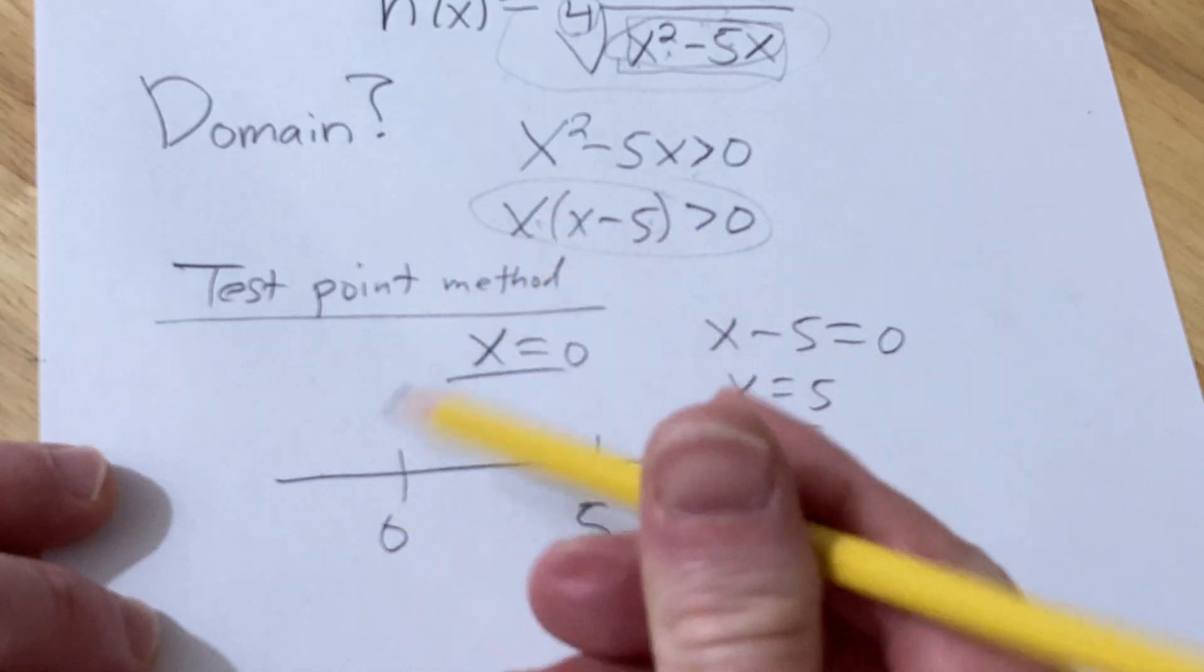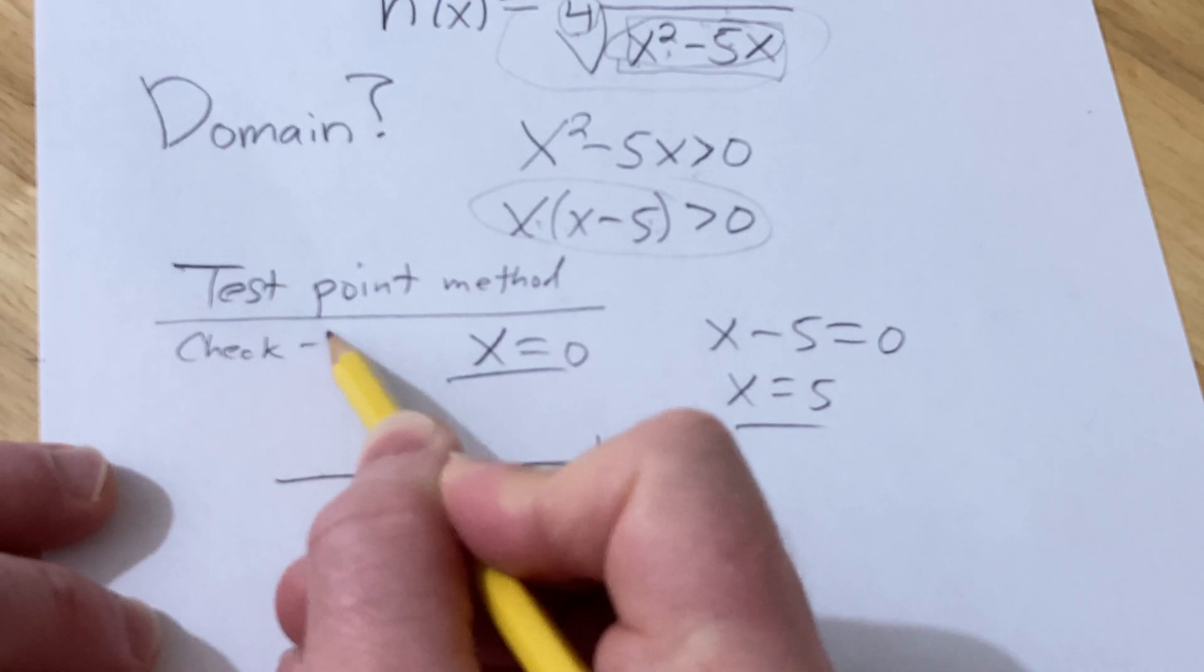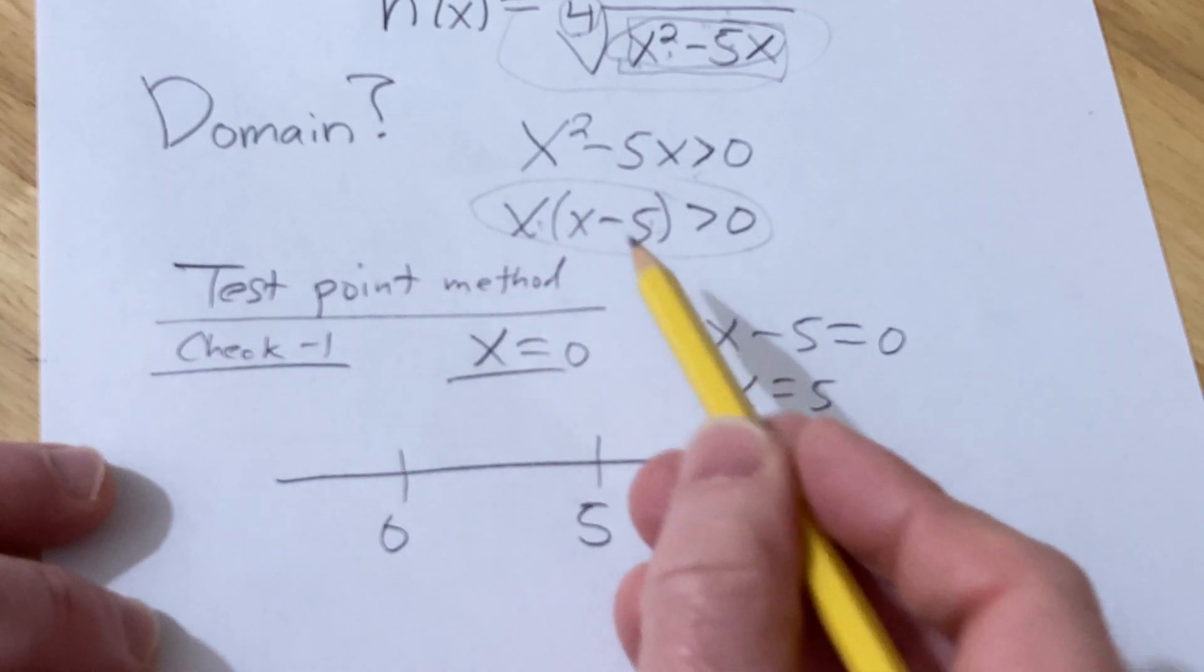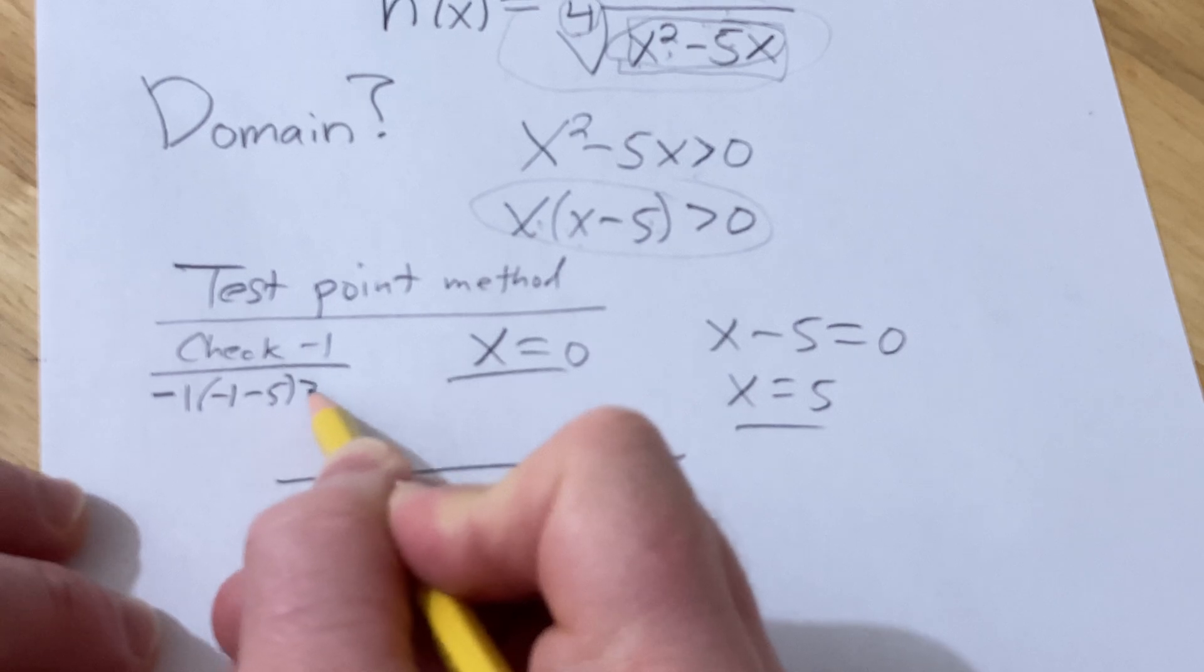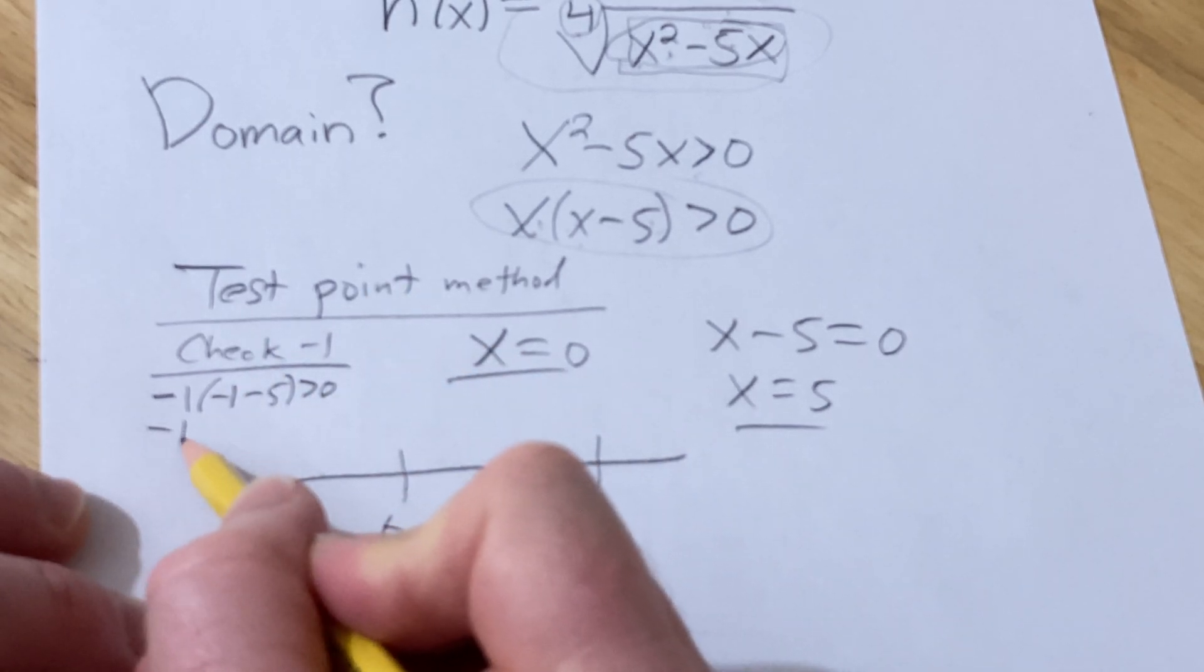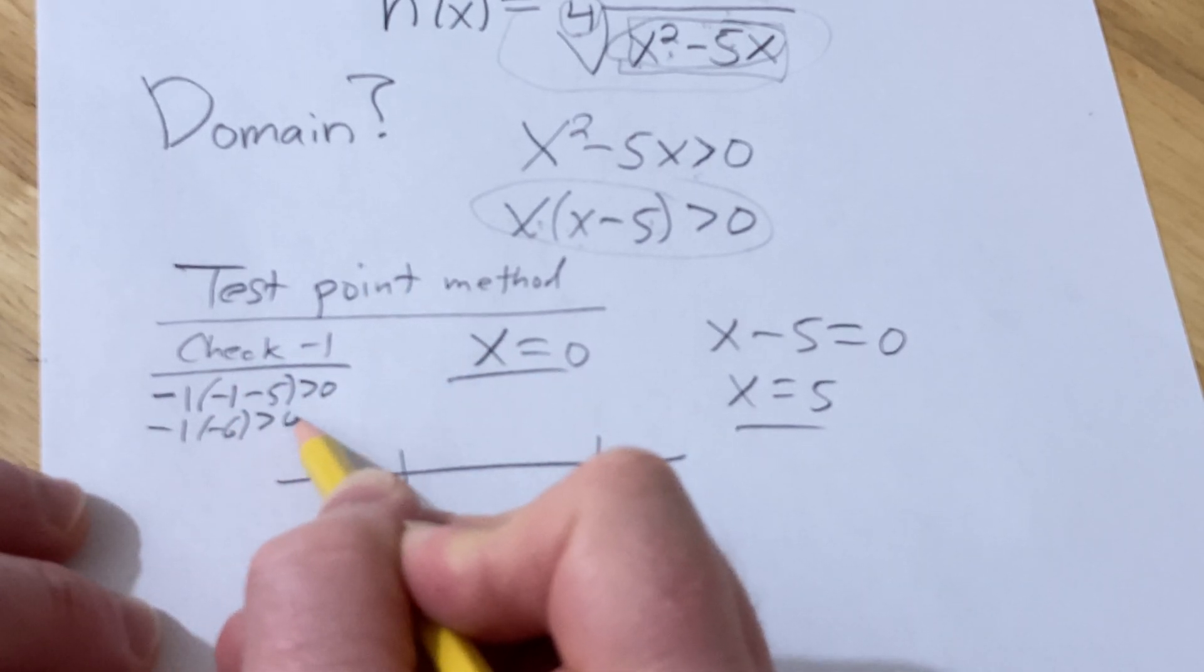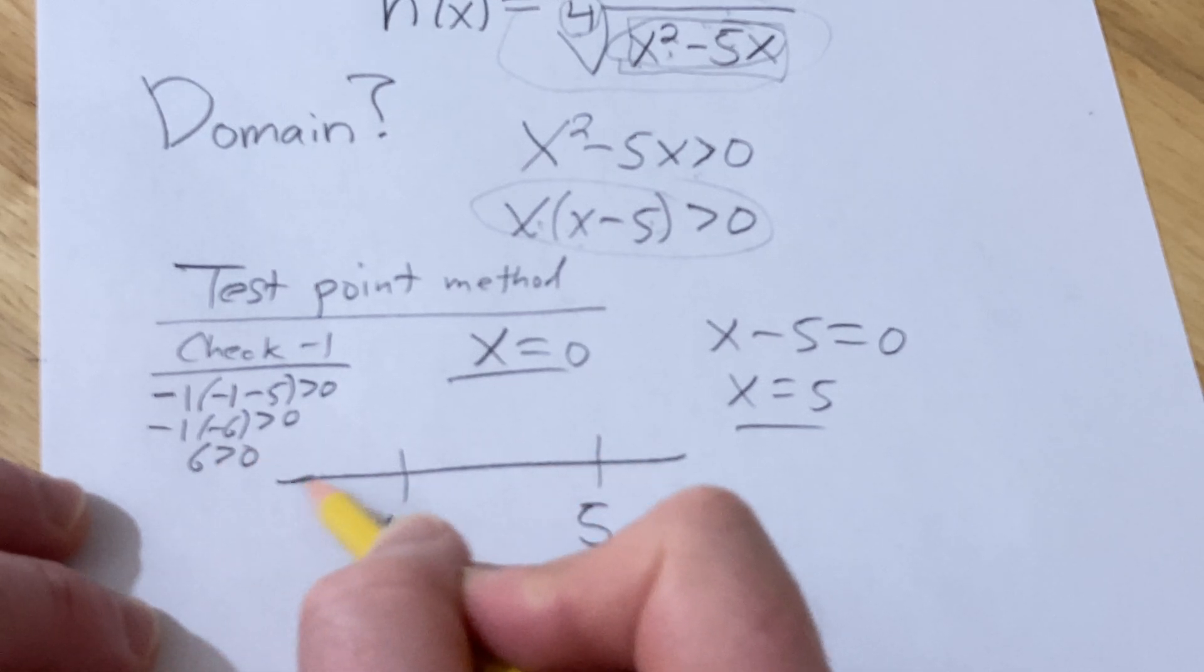For example, let's pick negative one. You can pick any number less than zero. Plugging in negative one into our inequality, we have negative one times (negative one minus five) greater than zero. That's negative one times negative six, greater than zero. Six greater than zero. That's true, so we shade.